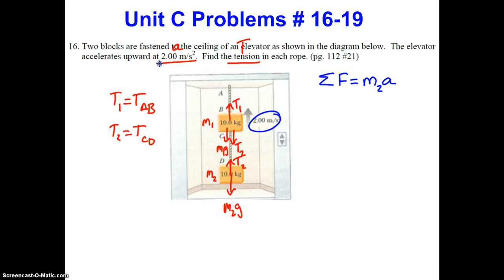Since the answer is yes, we now go ahead and substitute. Remember, direction of motion is positive. So this would be T2 minus m2g equals m2a.